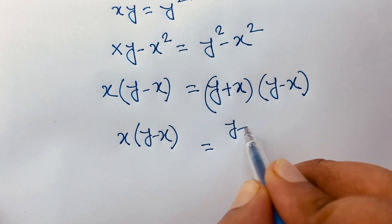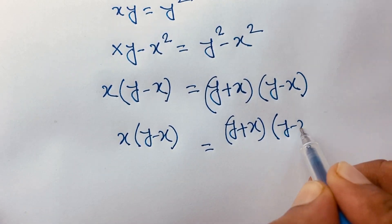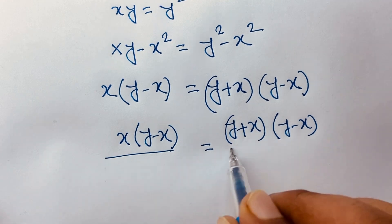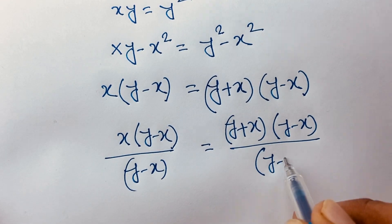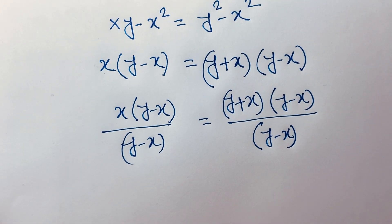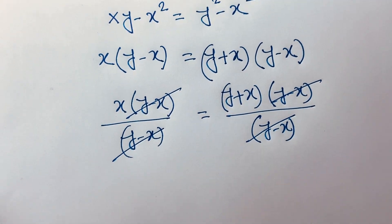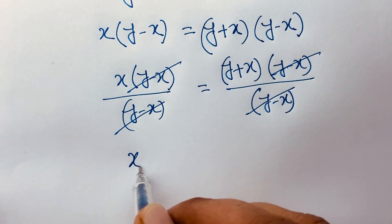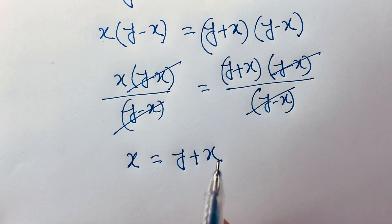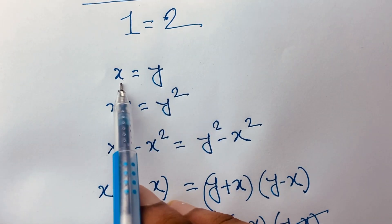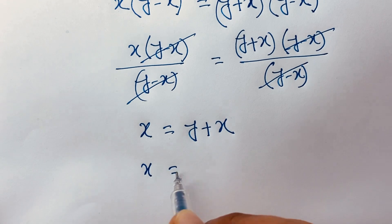So we have x(y minus x) equals (y plus x)(y minus x). I divide both sides by (y minus x) — these cancel on both sides — and we find x equals y plus x. But remember that y is equal to x.